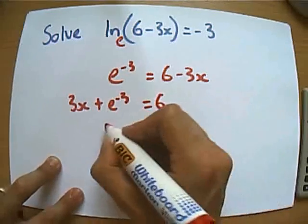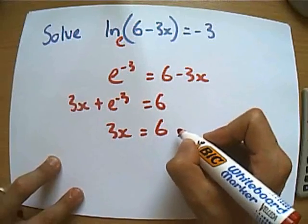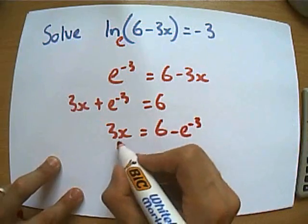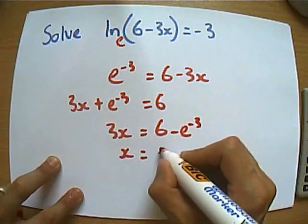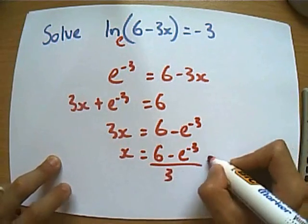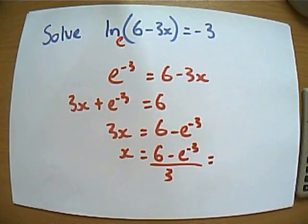And then we're going to take the e to the minus 3 over on the other side. And again, this is just going to be some number or another. And then I'm going to divide everything by 3.